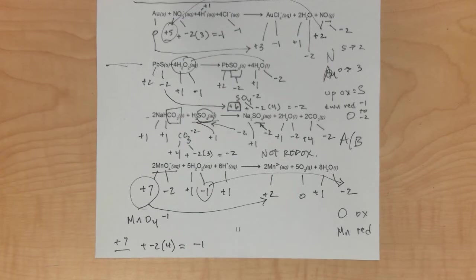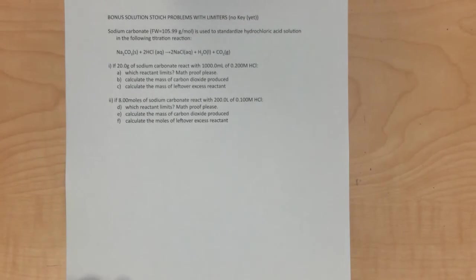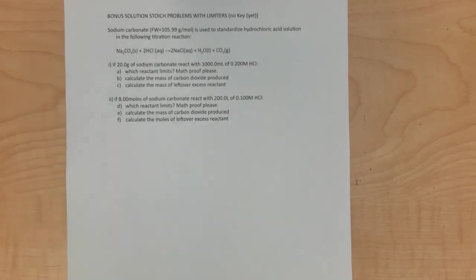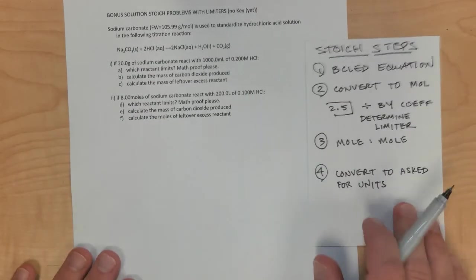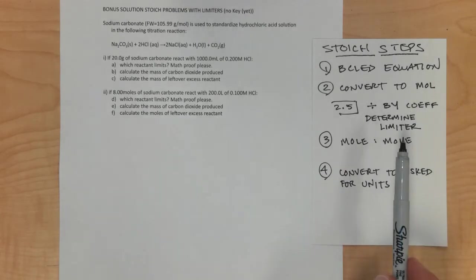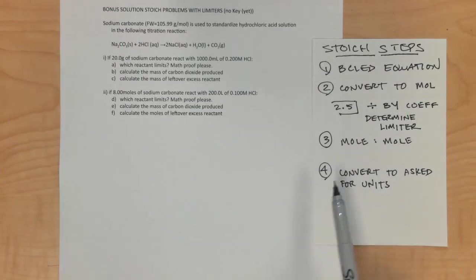That takes care of the redox reaction problems. Now we have two solution stoichiometry problems to finish up the whole practice test. Steps to stoichiometry: balanced chemical equation, when in doubt convert to moles, if given more than one amount divide by the coefficient to determine the limiter, then do the mole-to-mole ratio, and convert to the asked-for units.